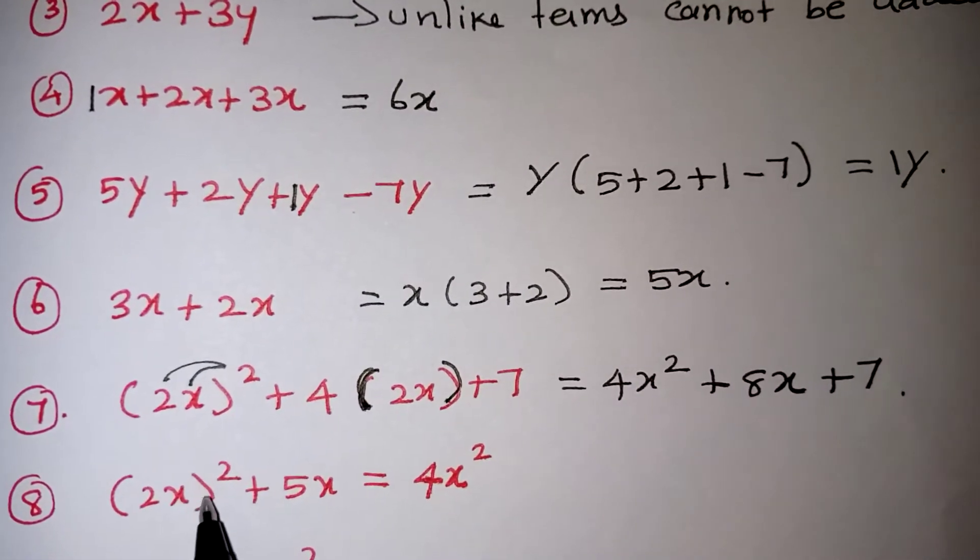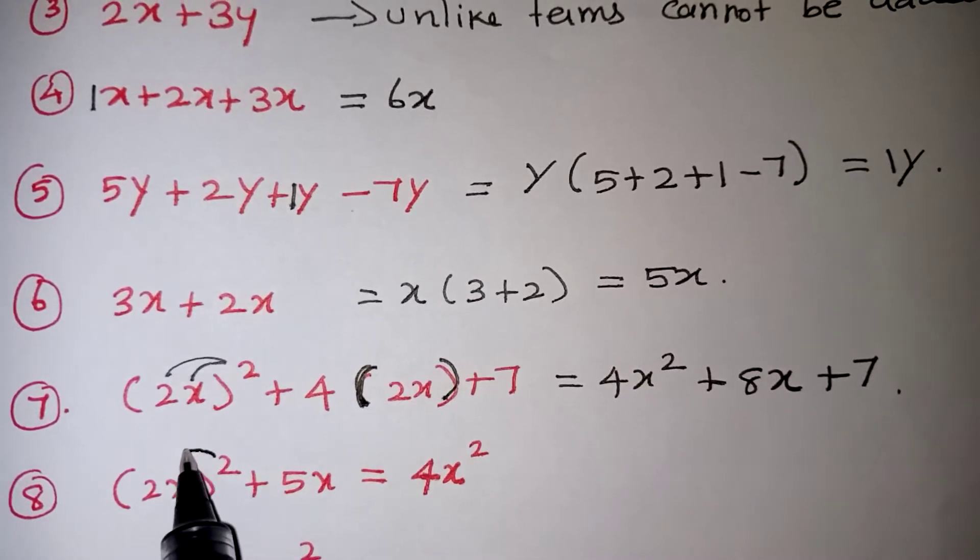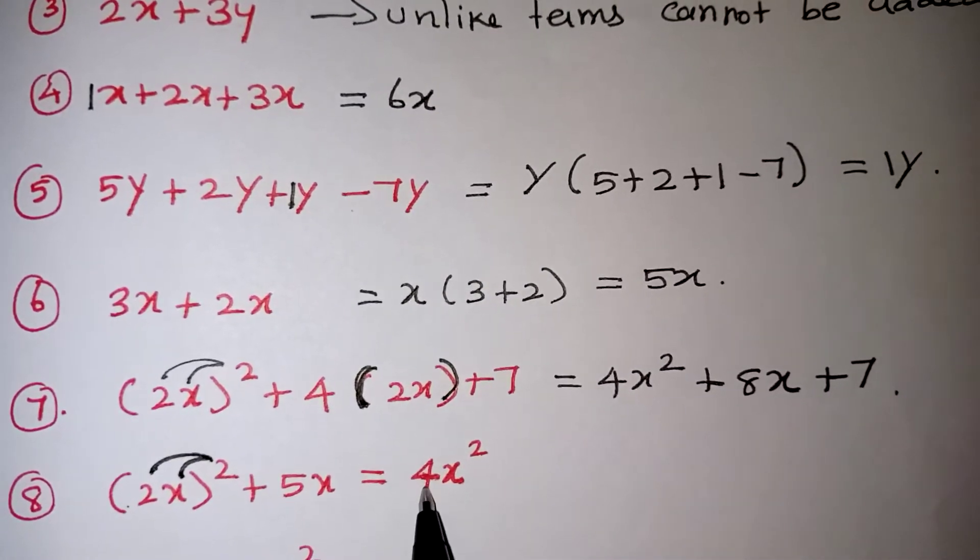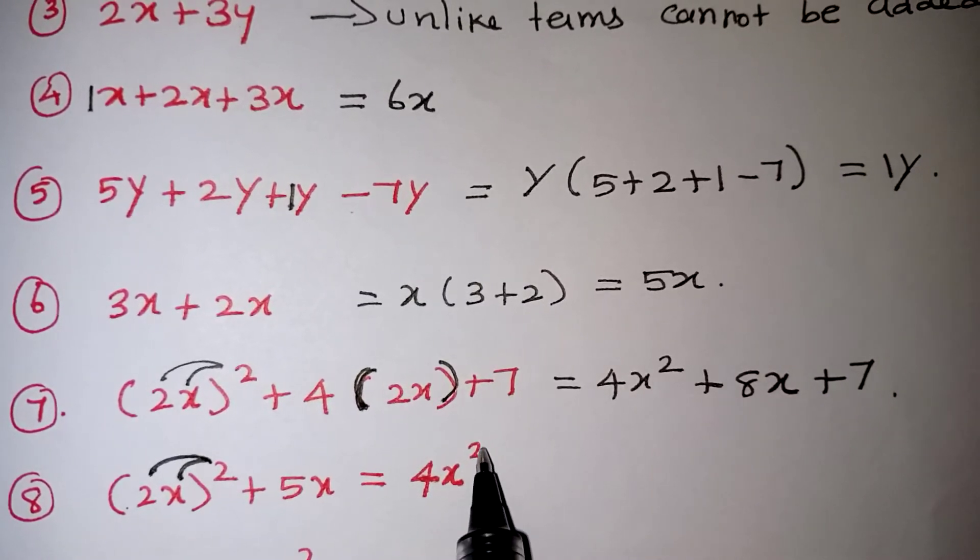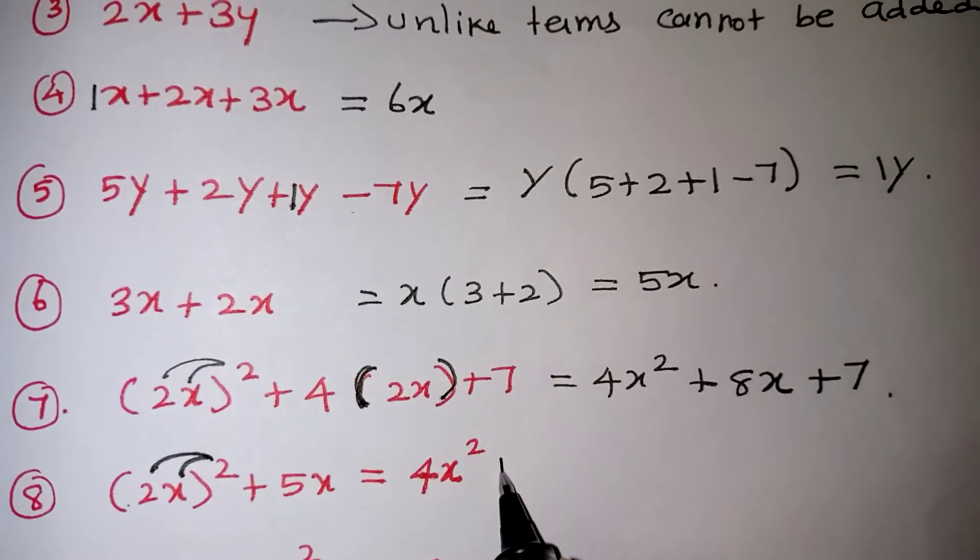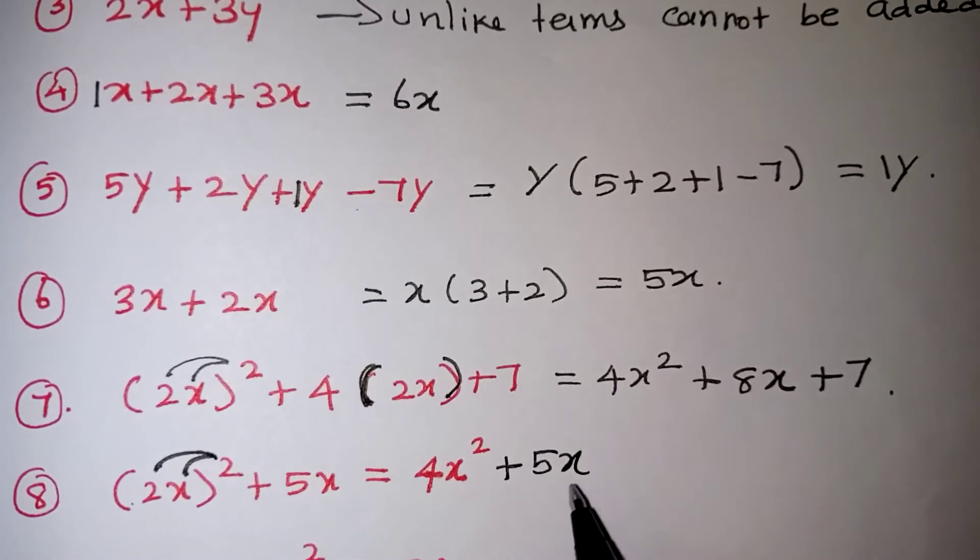Coming to the next problem. Again the same way, the square is common for the 2 as well as for the x. So 2 when you are squaring, 4 is coming. x if you are squaring, x squared will come. This square is missing in your book. So actually square should come here and plus 5x will come as it is. That is your correct answer.